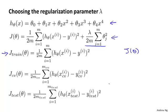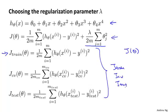Similarly, I'm also going to define the cross-validation set error and the test set error as before — the average sum of squared errors on the cross-validation and test sets. To summarize, my definitions of J_train, J_cv, and J_test are just the average squared error, or one half of the average squared error, on my training, validation, and test sets, without the extra regularization term.